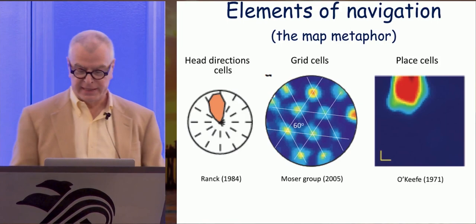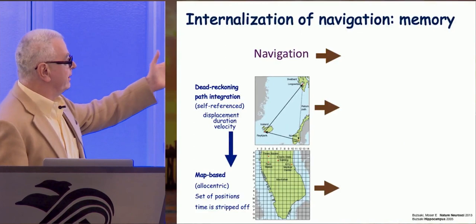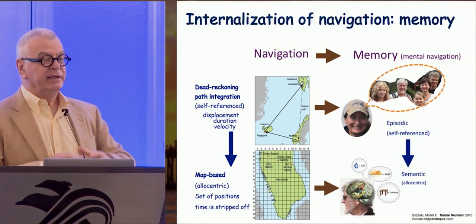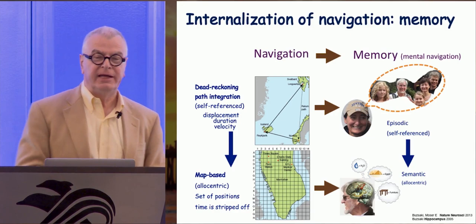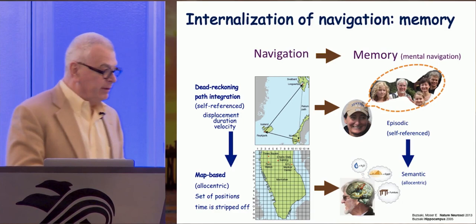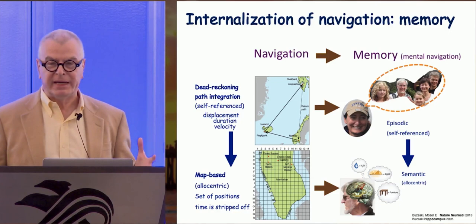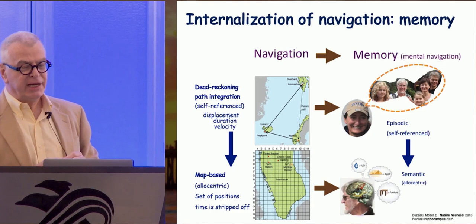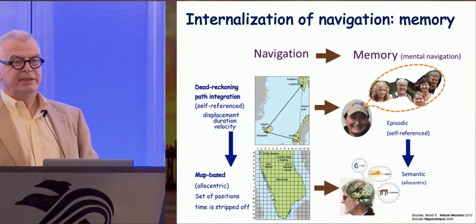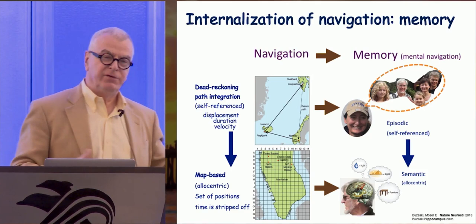Our memories that we can declare consciously come in two flavors: egocentric memory and explicit knowledge. You can make an assumption that initially nature worked out a mechanism to use the external world to help movement. But with time, the system internalized this outside world, and you no longer have to move with your muscles but can move into the future or past. This is mental navigation.